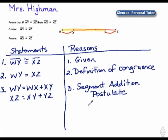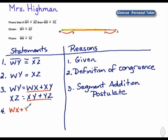Our next statement: since we know that W-Y equals X-Z, and we have these pieces — W-X plus X-Y equal to W-Y, and X-Y plus Y-Z equal to X-Z — we're going to use substitution and say that W-X plus X-Y equals X-Y plus Y-Z. That is by substitution.